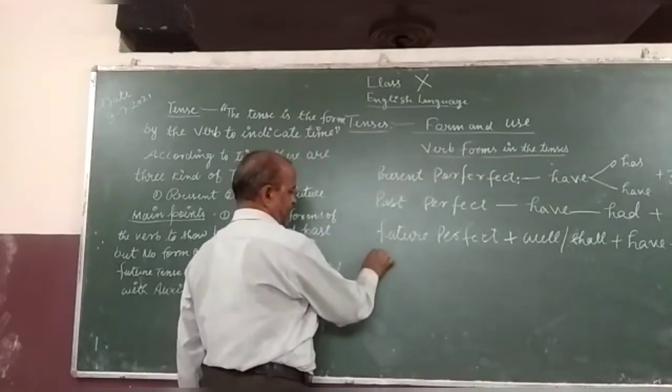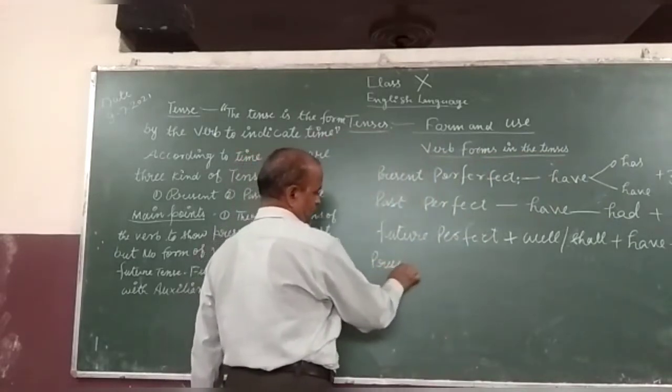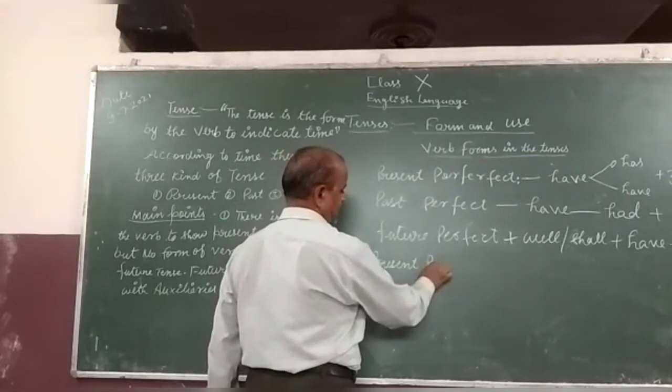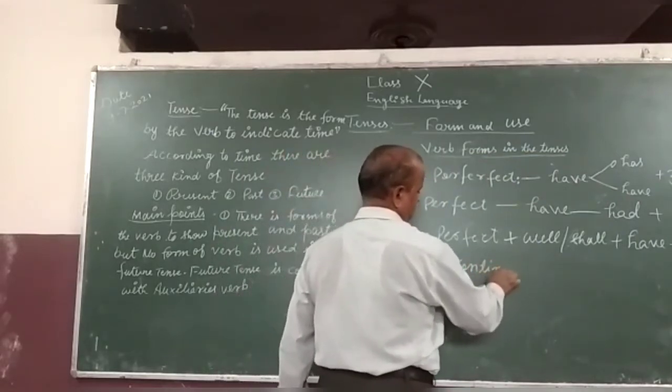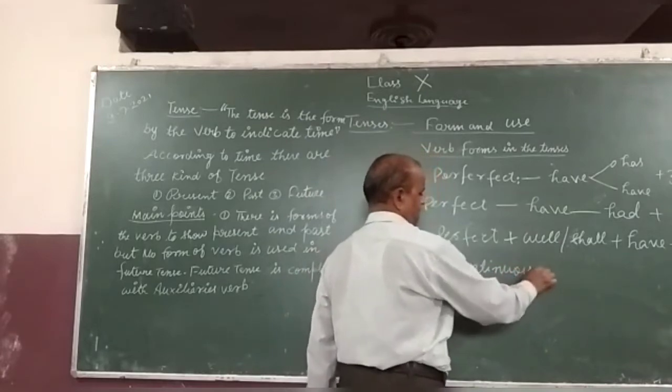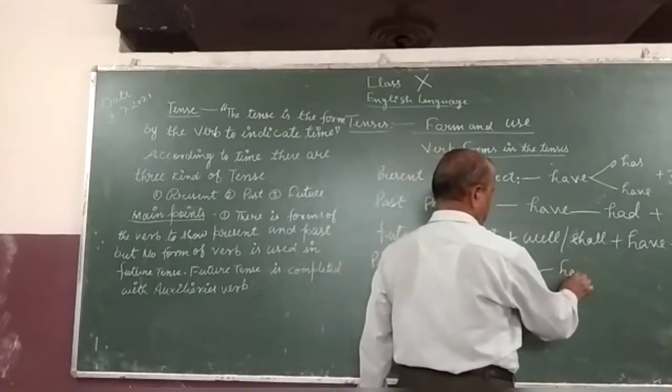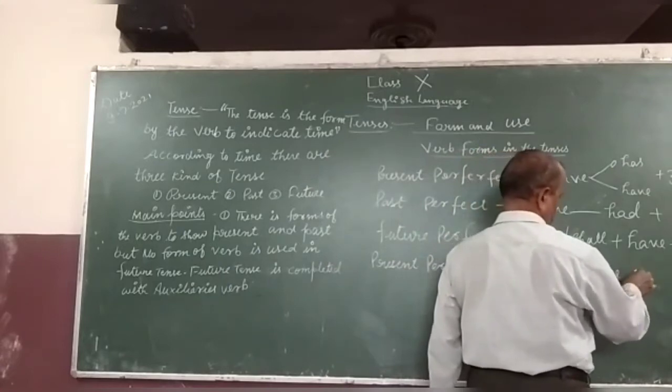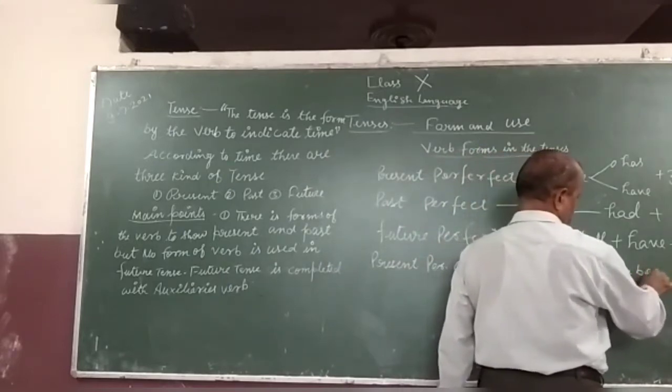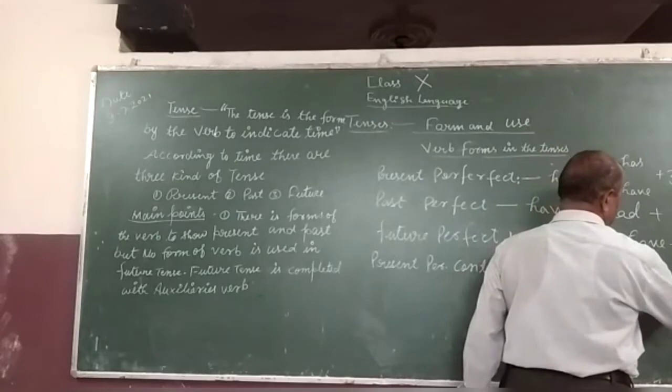Perfect continuous: have or has plus been plus ing form of the verb.